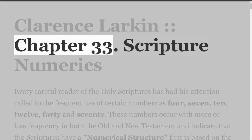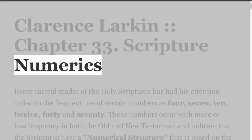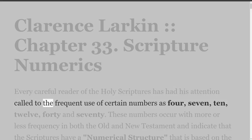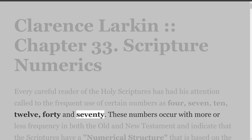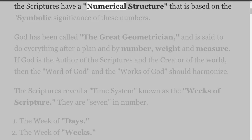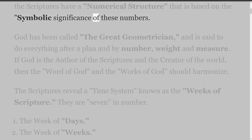Clarence Larkin, Chapter 33: Scripture Numerics. Every careful reader of the Holy Scriptures has had his attention called to the frequent use of certain numbers as 4, 7, 10, 12, 40 and 70. These numbers occur with more or less frequency in both the Old and New Testament, and indicate that the Scriptures have a numerical structure that is based on the symbolic significance of these numbers.